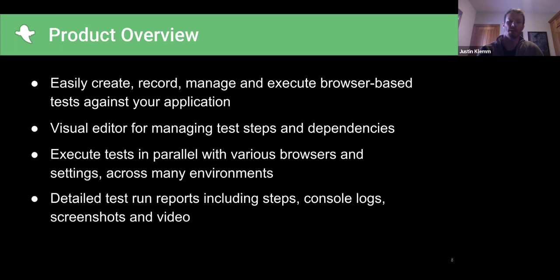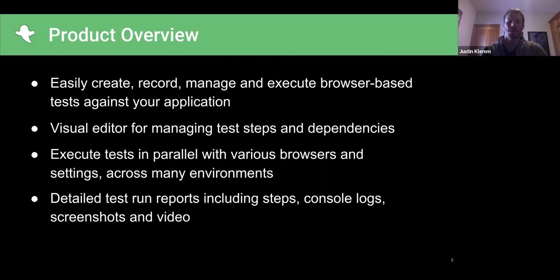We execute tests in parallel by default, which is a really nice feature. Most services have you pay for concurrency — two or four concurrent VMs. With our service, we've always gone the parallel route from the beginning. If you run 20 tests, all 20 run in parallel, so you can rip through your suites quickly rather than waiting 10, 15, or 20 minutes for tests to complete one at a time.